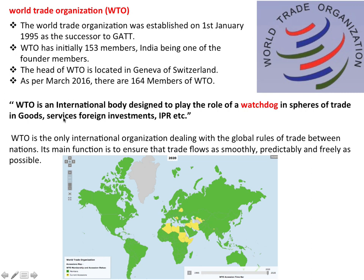WTO is an international body designed to act as a watchdog in international trading. On the membership map, green-colored countries are permanent members of WTO, while countries shown in yellow are accession countries that will receive permanent membership shortly.